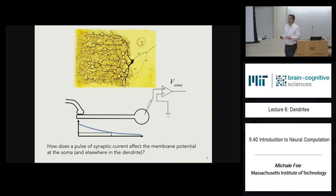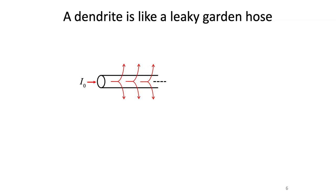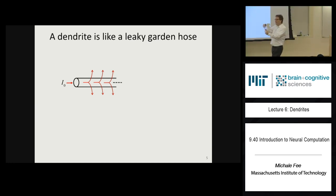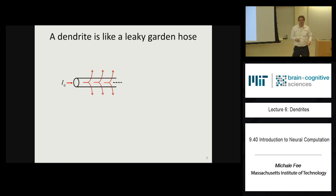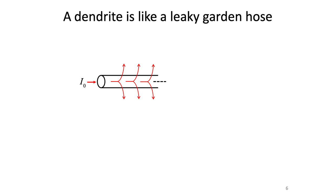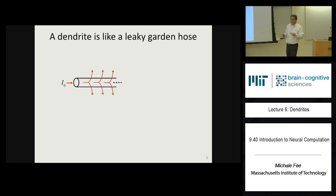The basic conceptual picture is that signals propagate some distance down toward the soma but gradually leak out. You can think of the dendrite as a leaky pipe or leaky hose. Imagine you poked holes in a garden hose — when you turn on the water, some flows down the hose but some leaks out through the holes. Eventually all the water leaks out through the sides and won't reach your hydrangeas if the holes are big enough.